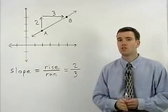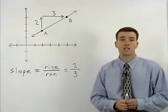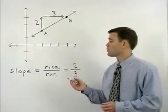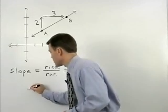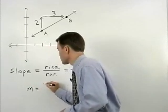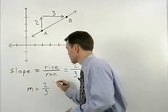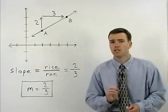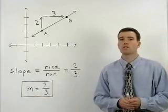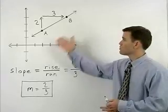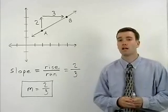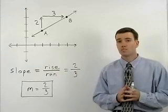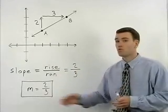The variable that's used to represent slope is M. So for this line, we would say that M equals 2 thirds. It's important to understand that no matter what two points you choose along this line, the slope, or rise over run, can always be simplified to 2 thirds.